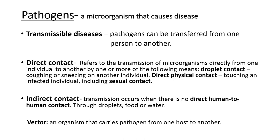We have transmissible diseases, where a pathogen can be transferred from one person to another. In other words, we have direct contact and indirect contact. Direct contact refers to the transmission of microorganisms directly from one individual to another by means such as droplet contact, coughing or sneezing on another individual, or direct physical contact including sexual contact. For indirect contact, transmission occurs when there is no direct human-to-human contact — it can be through droplets, food, or water.